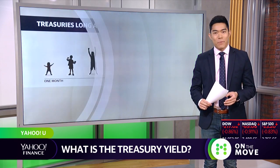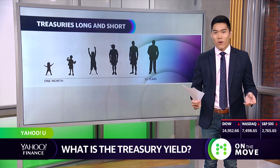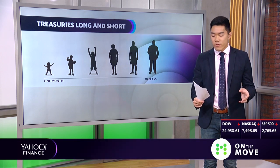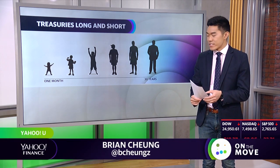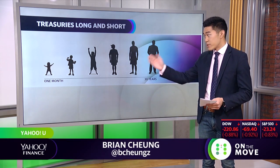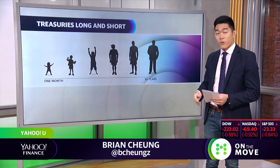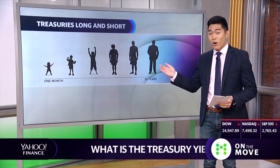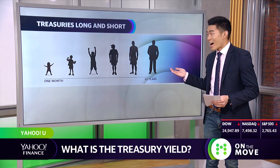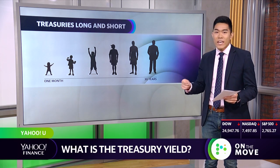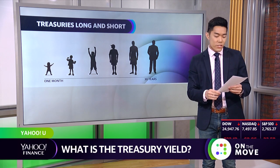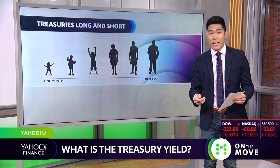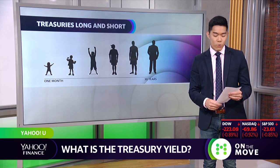To start off, we need to talk about what Treasuries are in the first place. There are a number of different types of maturities, ranging from as short as one month to as long as 30 years. These Treasuries are basically government debt that pays a certain yield.